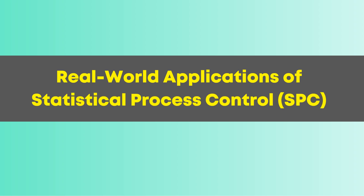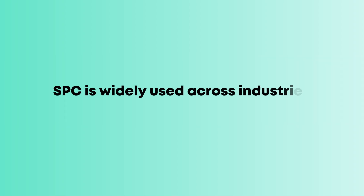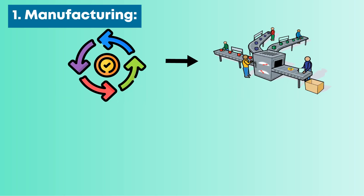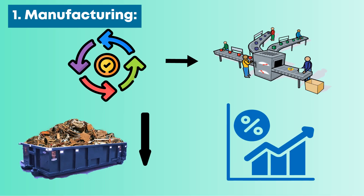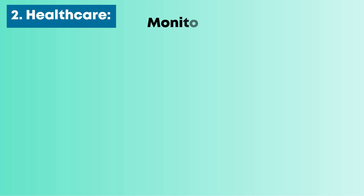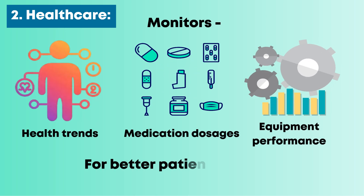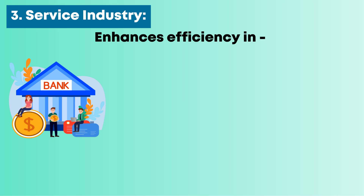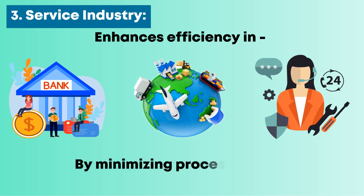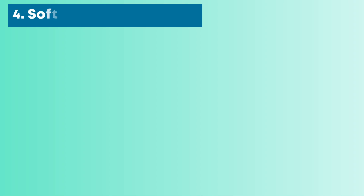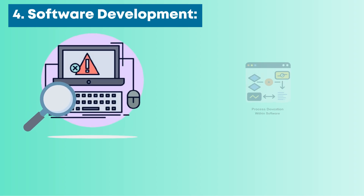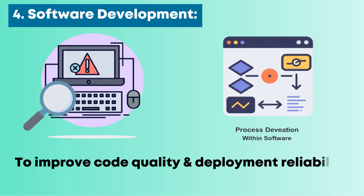Real-world applications of Statistical Process Control: SPC is widely used across industries. In Manufacturing, it ensures consistency in mass production, reducing material waste and improving yield. In Healthcare, it monitors patient health trends, medication dosages, and equipment performance for better patient outcomes. In the Service Industry, it enhances efficiency in banking, logistics, and customer service by minimizing process errors. In Software Development, it tracks software defects and process deviations to improve code quality and deployment reliability.